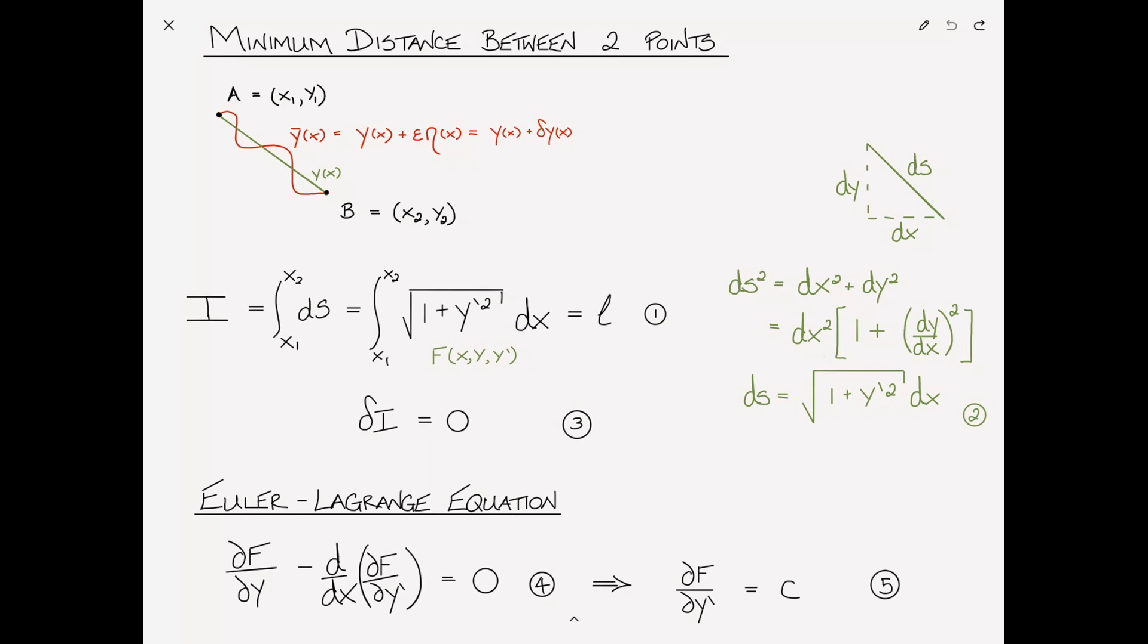In this case, because the functional is not a function of y explicitly, the first term of the Euler-Lagrange equation cancels out, with the result that the Euler-Lagrange equation reduces to simply ∂f/∂y' is equal to a constant. When we plug this functional in here, we end up with this equation.